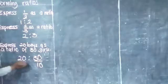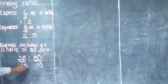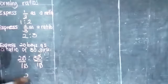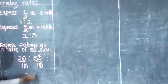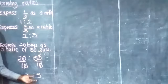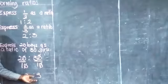Divide 20 by 10 and divide 30 by 10. Then you will remain with 2 to 3, and that will be the ratio in lowest terms.